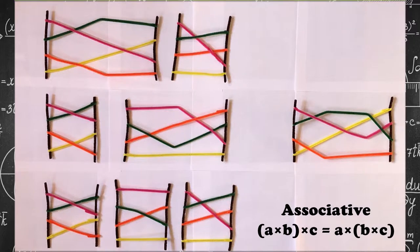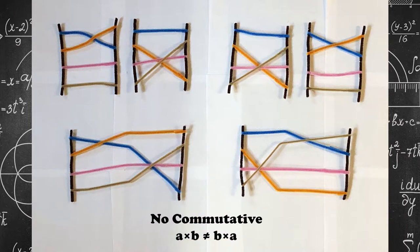Hey guys, Bo here. Let's go over some properties of braid groups. They are associative. So a times b times c equals a times b times c. But they are not commutative. a times b does not equal b times a.